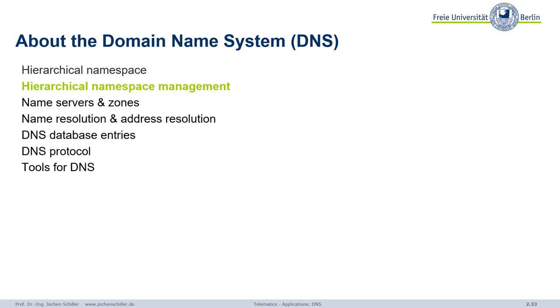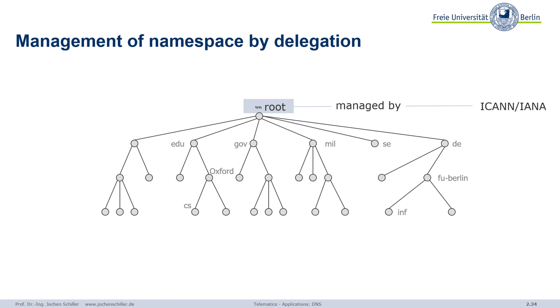We saw the idea of a hierarchical namespace and now we have to manage this — who's doing what inside this tree. At the top level, ICANN and IANA manage the root. I will come back to the root and what you have to do there.